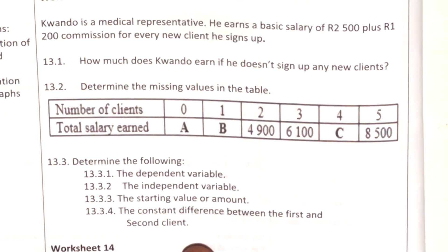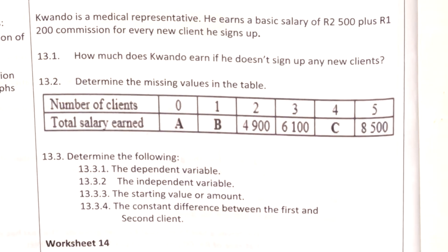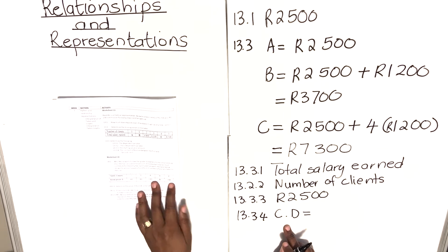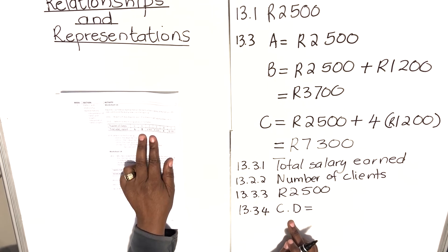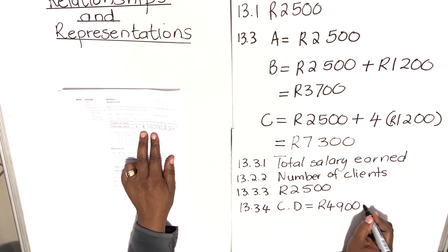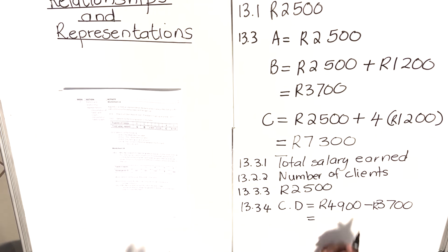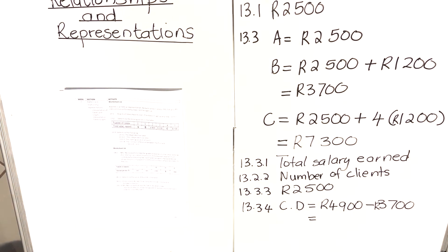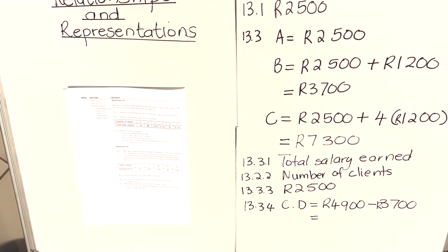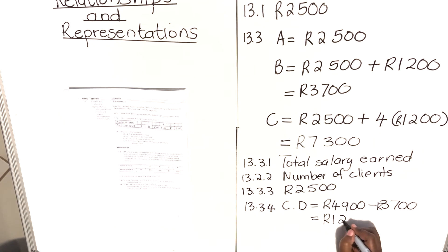A constant difference means the same difference — you subtract consecutive terms to find it. So if you subtract R4 900 minus R3 700, you get the constant difference. That amount is R1 200, meaning every time he gets a new client he earns R1 200 more. So the constant difference is R1 200.